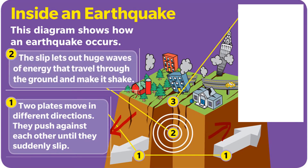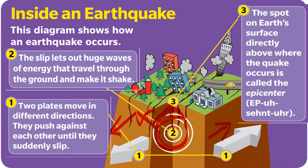The slip lets out a huge wave of energy coming out from the earth, which shakes the ground. The spot on the earth directly above is also known as the epicenter — the center of the earthquake. You can see what is going on with the buildings and the infrastructure.